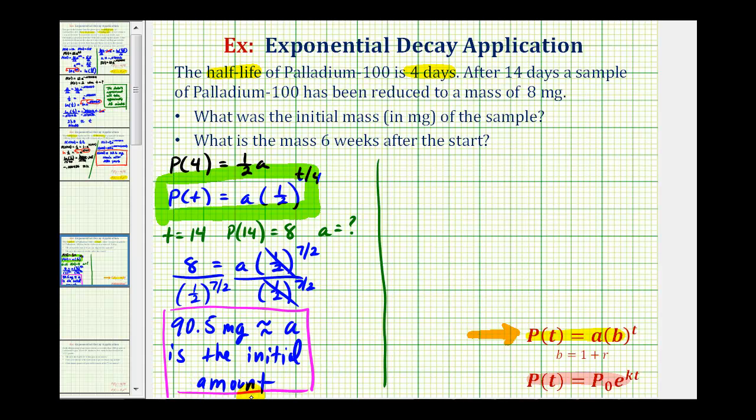They also want us to determine the mass after six weeks. We need to be careful here because t in our function represents the number of days, and here they're giving us the time in weeks. And since there are seven days in each week, and six times seven is equal to 42, they're asking us to determine the function value when t equals 42. Again, six weeks equals 42 days.